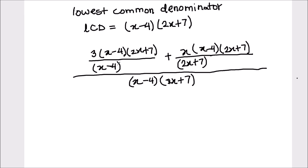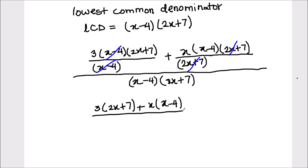Here, x minus 4 in the first term gets cancelled by x minus 4 in the denominator, and in the other term 2x plus 7 gets cancelled. We are left with 3 times 2x plus 7, plus x times x minus 4, all divided by x minus 4 times 2x plus 7.